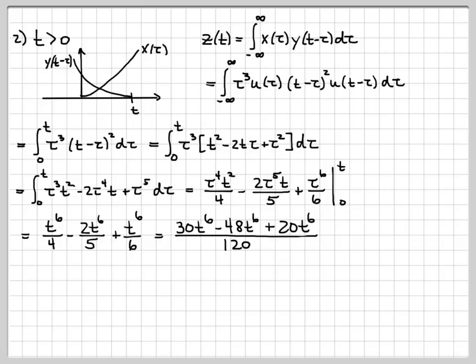And then I have 30t to the sixth minus 48t to the sixth plus 20t to the sixth, which simplifies to 2t to the sixth over 120 or 1 over 60 t to the sixth.